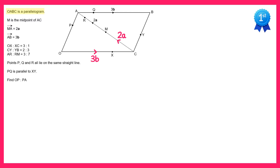Next we'll look at the vector from C to B. To get from C to B you could go from C to A, and then from A to B — so CA plus AB. We know both of these vectors: from C to A must be 4A, and from A to B must be 3B. So the sum of those is 4A plus 3B.